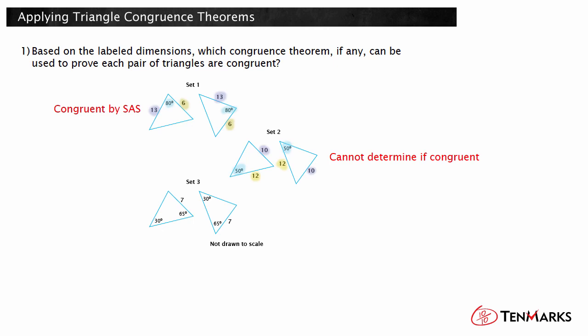Finally, in set 3, the triangles have two sets of congruent angles and a set of congruent sides. Notice the congruent sides are both across from the 30-degree angle. This means we can use the angle-angle-side congruence theorem to prove the triangles are congruent.